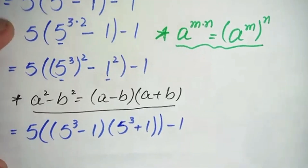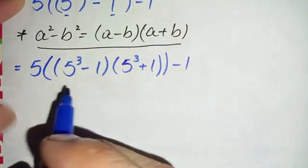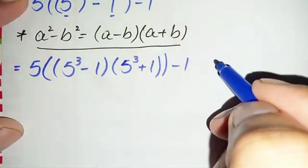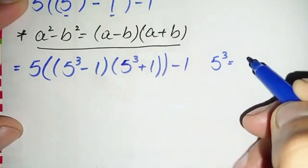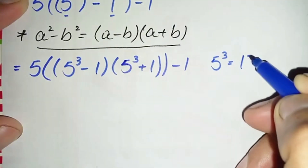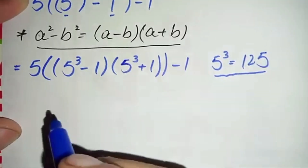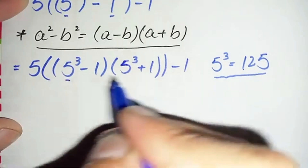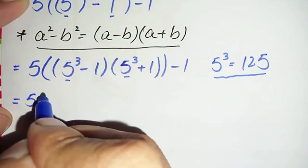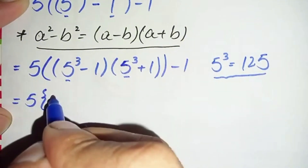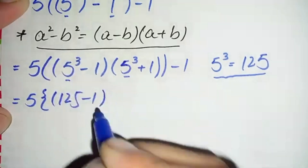Now here we will find the value of 5 raised to power 3, or 5 cubed. We multiply 5 three times: 5 times 5 is 25, and 25 times 5 is 125. So the value of 5 cubed is 125. We replace 5 cubed with 125, so this equation becomes 5 times 125 minus 1.